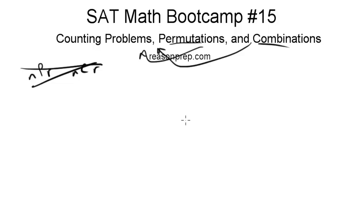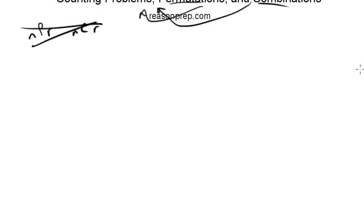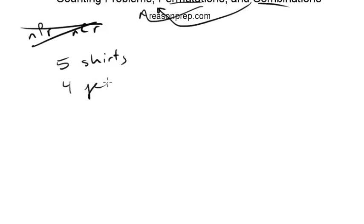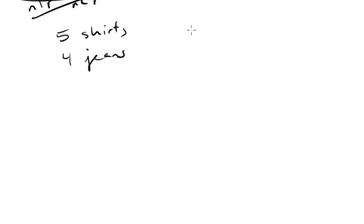Let me give you some examples to make it clearer. Let's say you were at a clothes store and you wanted to figure out an outfit. You had to choose from five kinds of shirts and four kinds of jeans, and you wanted to know how many different outfits you could make — how many different outfits could you have from this group of five shirts and four jeans? Let's think about it by hand.